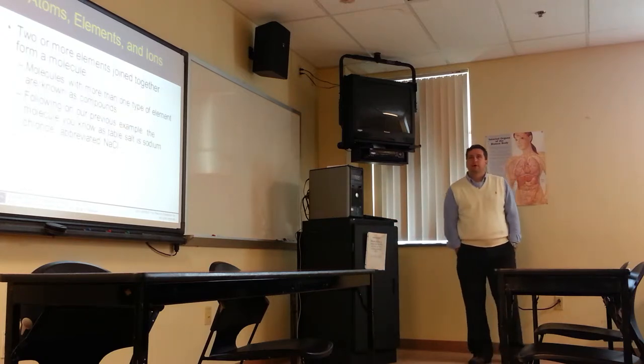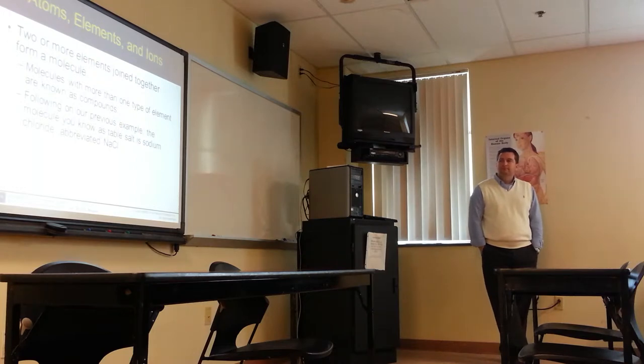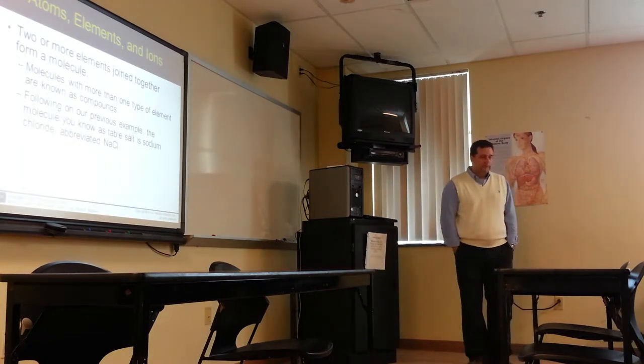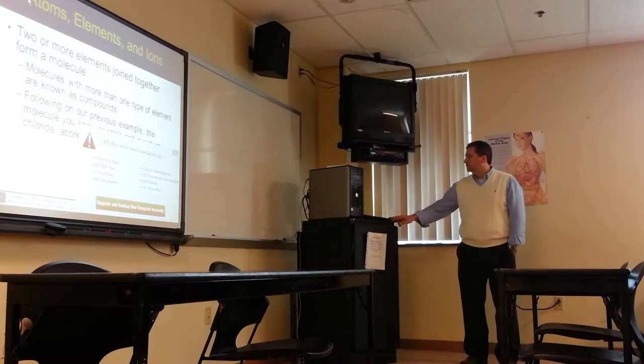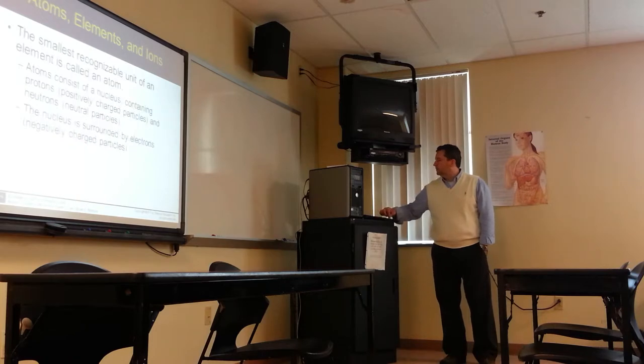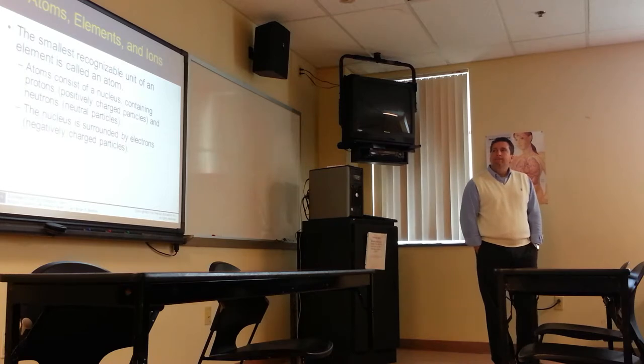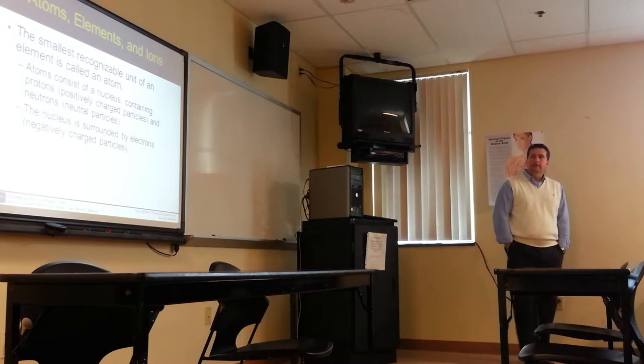Two or more elements joined together is a molecule. So we have sodium and chloride, we have a molecule of sodium chloride. But you can also have oxygen and oxygen and have a molecule of oxygen. So it doesn't have to be two separate things. The smallest recognizable unit of an element is called an atom. The atom of sodium, the atom of chloride, the atom of oxygen.